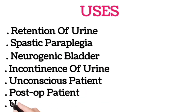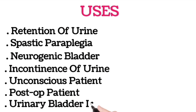When there is incontinence of urine, you can use a Foley catheter. For an unconscious patient, you can use a Foley catheter. For a post-op patient, you can use a Foley catheter — most commonly after abdominal or pelvic surgeries. When urinary bladder irrigation is needed post-op, you can use a Foley catheter.